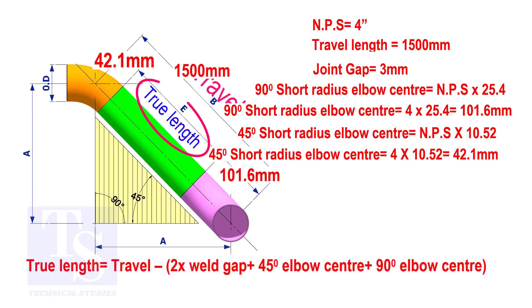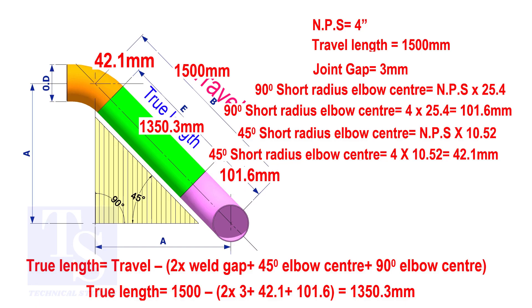To calculate the true length of the pipe, subtract two weld gaps plus both elbow centers from the travel length. The true length of the pipe is 1350.3 millimeters.